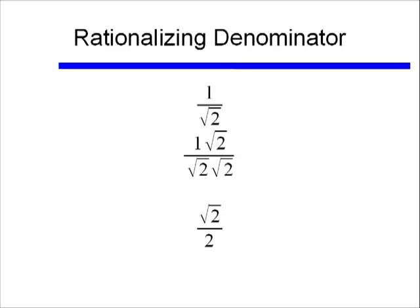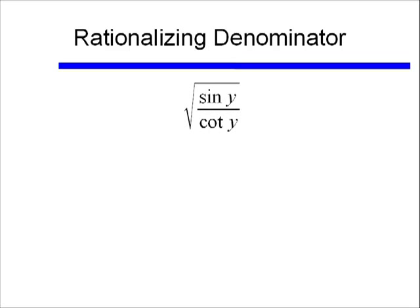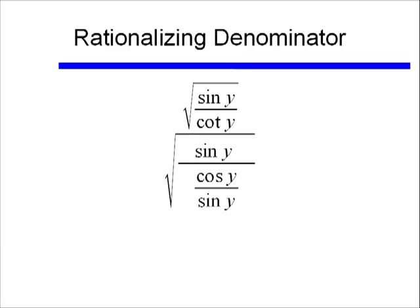Well we can do the same thing, but in terms of trigonometry. So if I give you this problem, what's the square root of sine y over cotangent y, and I ask you to rationalize the denominator. Well first of all, our typical trick is to change that cotangent into cosine y over sine y. Once I do that, okay it's not looking much simpler now.